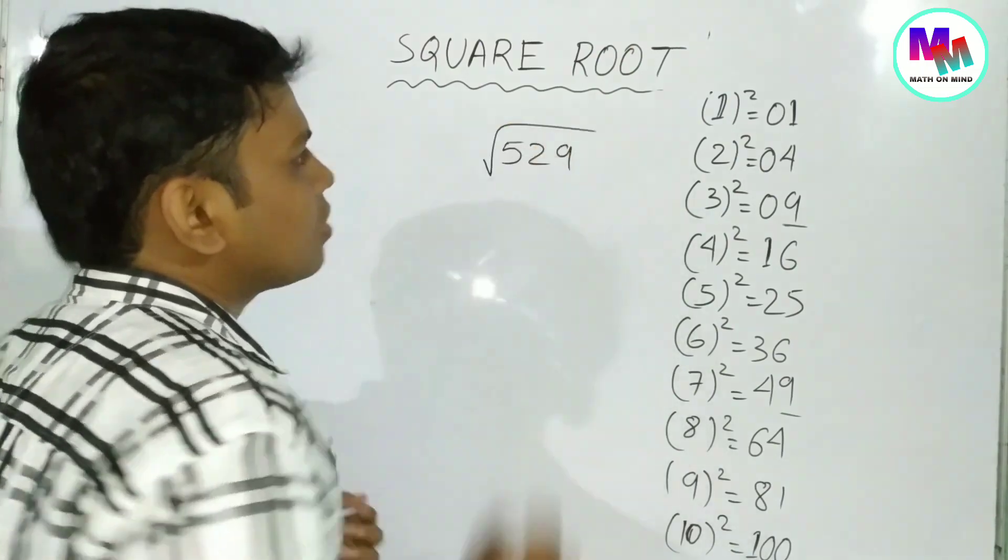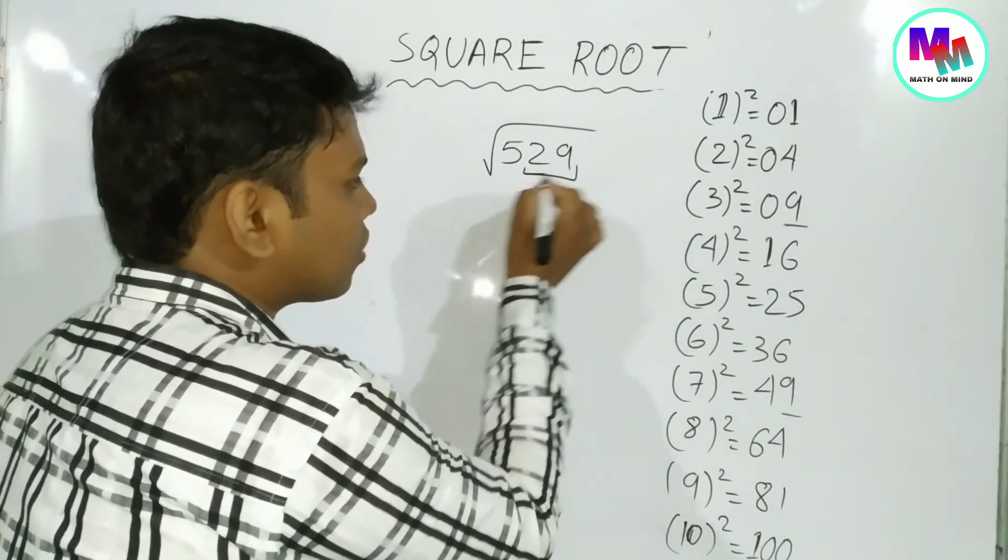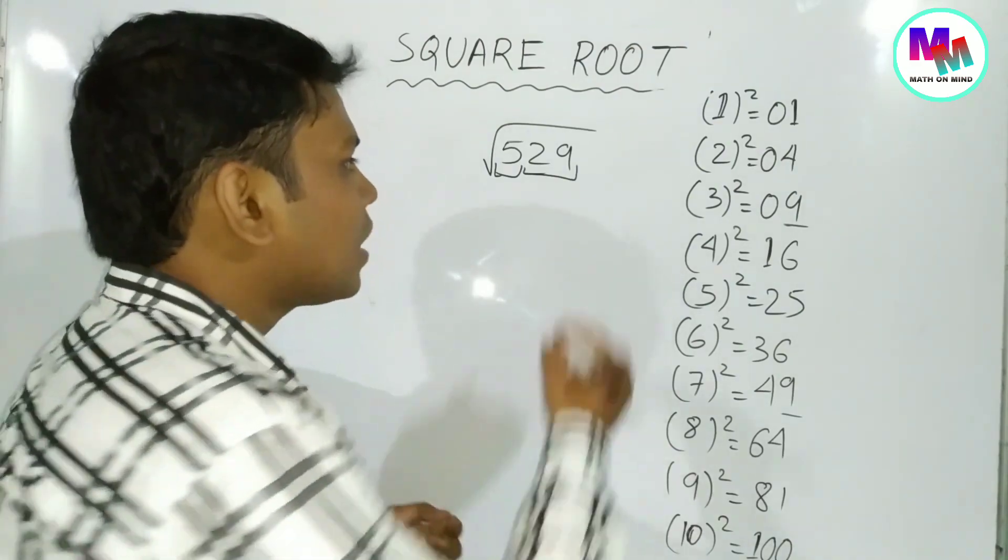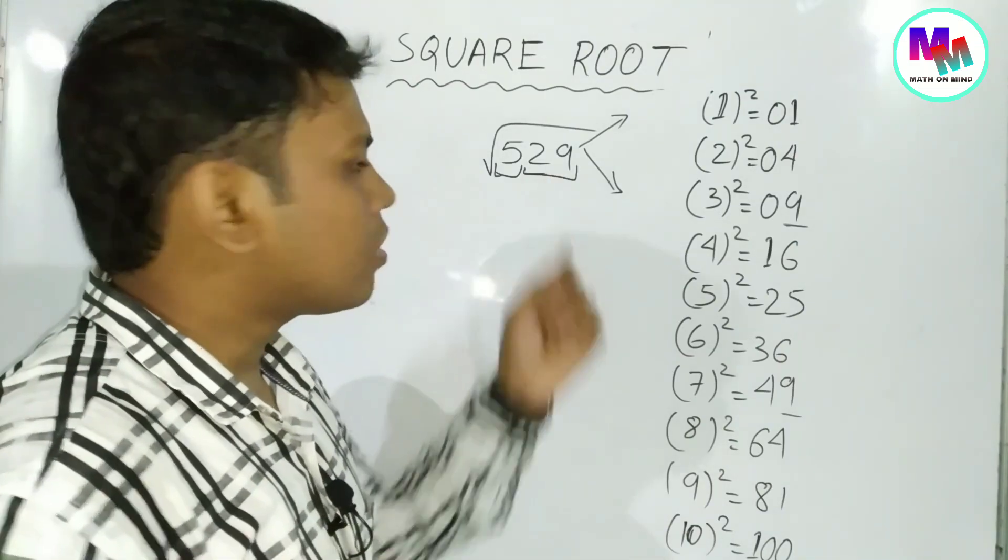We'll work through this problem. I'll show you the method step by step. There are two countries - they come to cover the two numbers and they group them.